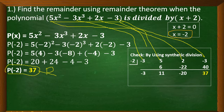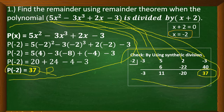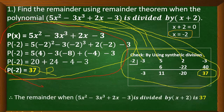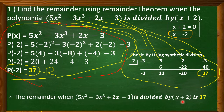I have already discussed synthetic division in my previous video thoroughly, so you may review that. As you have observed, we also get 37 here, meaning that whether we use the remainder theorem or synthetic division, we get the same answer. But the synthetic division solution is not necessary when you are asked to find the remainder using the remainder theorem. Therefore, the remainder when 5x squared minus 3x cubed plus 2x minus 3 is divided by x plus 2 is 37.